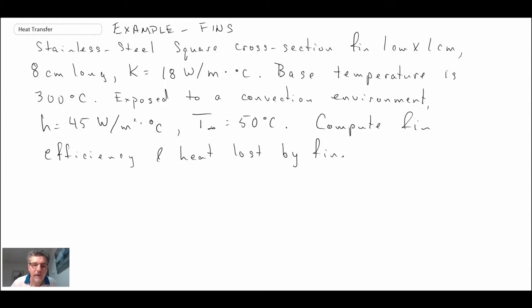Okay, so there is our problem statement. What we're dealing with here, we have a stainless steel square cross-section fin. We're told it's one centimeter by one centimeter, eight centimeters long. Thermal conductivity is 18 watts per meter degrees C. The base temperature is 300 degrees C. Convective environment, H is 45, T infinity is 50.